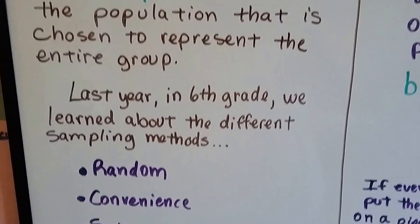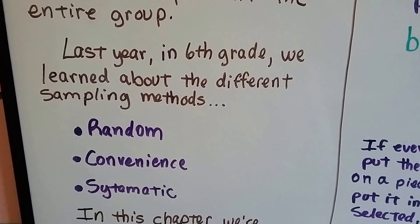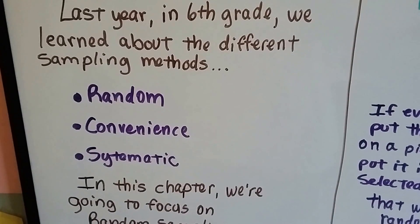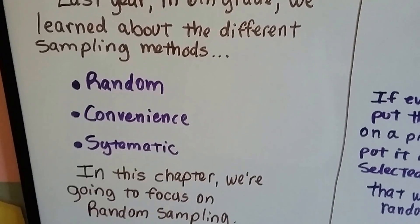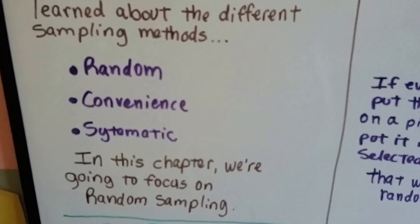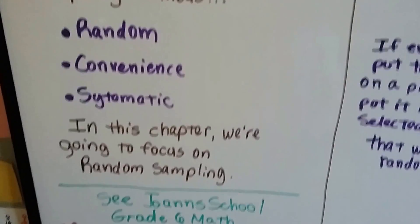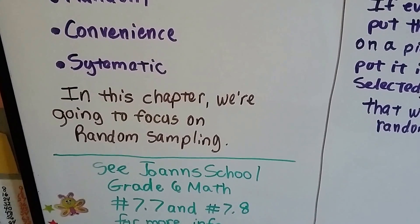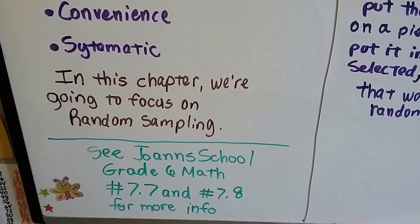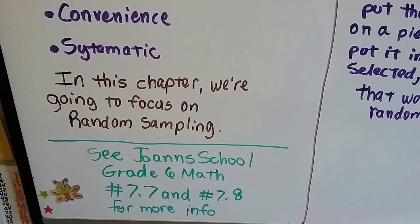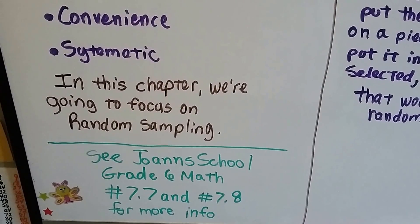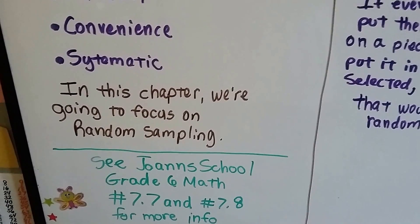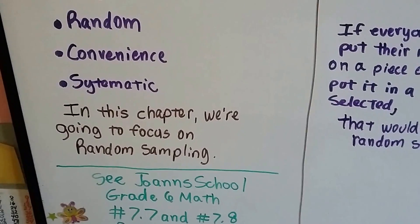Last year in 6th grade, we learned about the different sampling methods: random, convenience, and systematic. In this chapter, we're going to focus on random sampling. For convenience and systematic, you can go back to the Joanne School Grade 6 math videos and see 7.7 and 7.8, and it'll give you more information about those types of samples.